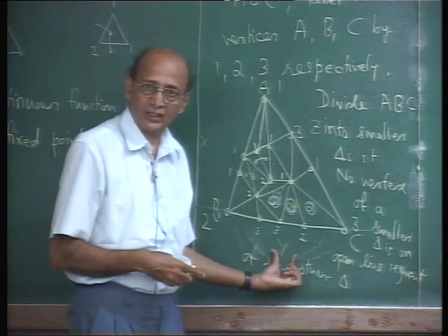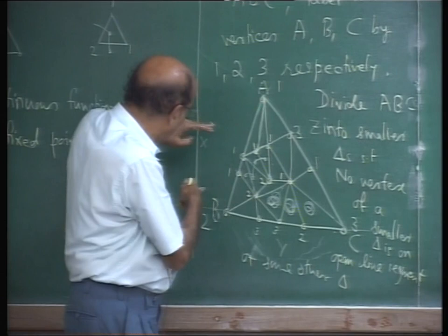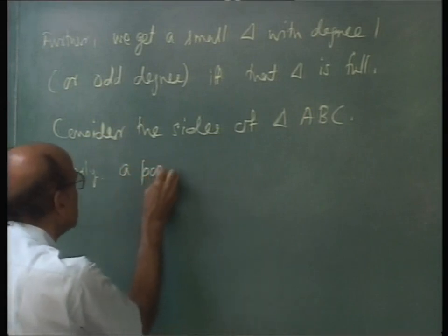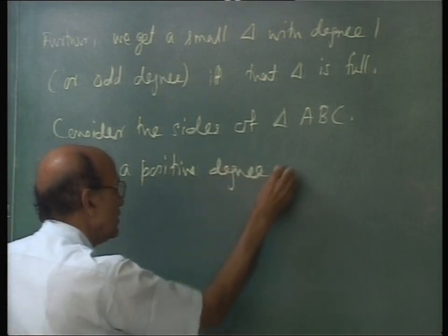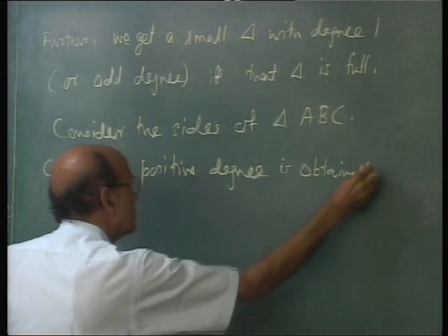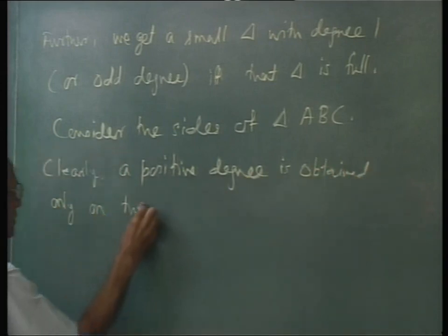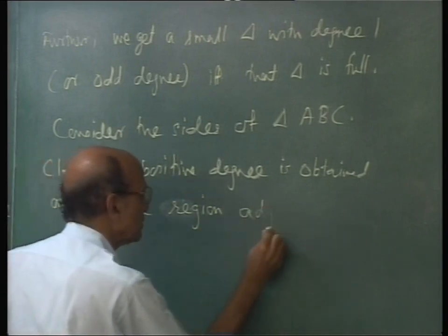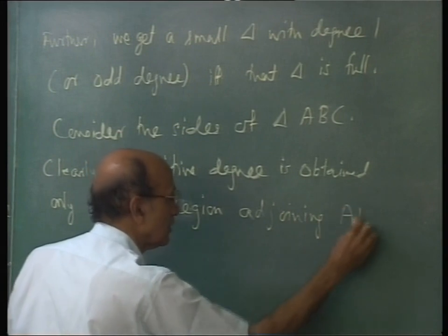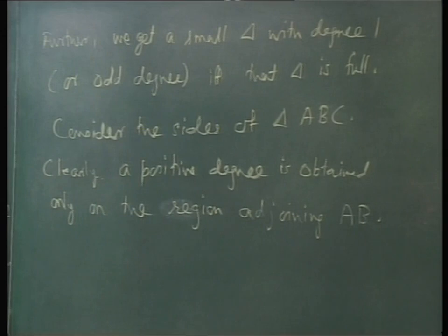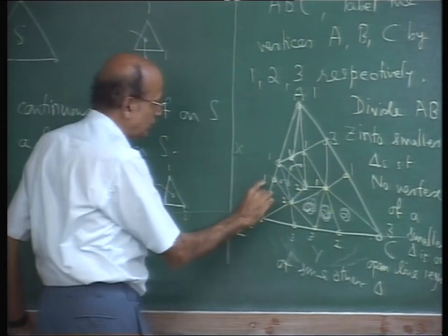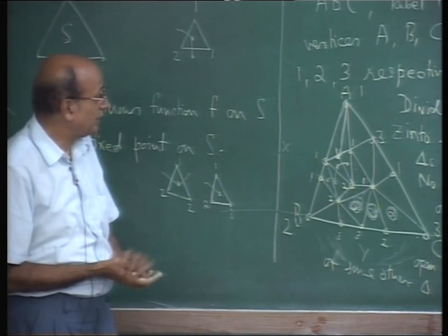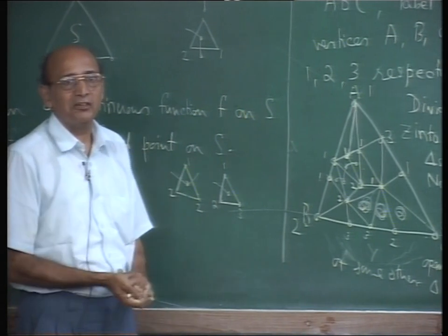Now let's look at the sides. The degree of the side with labels like 2-3, 2-3 is zero — that's clear. The degree of this side is also zero. It only remains to see what is the degree of the region adjoining AB. In the situation we are looking at, the degree is actually equal to 1. I want to say that the degree of this region will be an odd number.